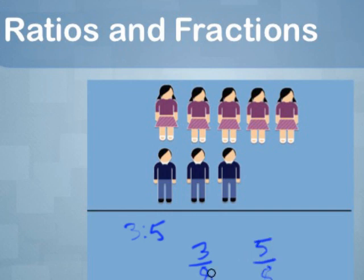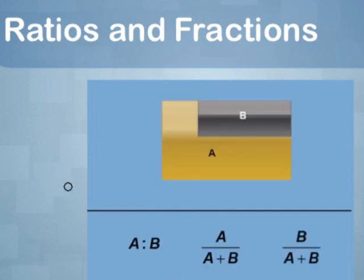See a pattern? The denominator, 8, is the sum of 3 and 5. So if there is a collection of two types of objects, and they are in the ratio A to B for two numbers A and B, then the fraction of A is A over the sum of A plus B, and the fraction of B is B over the sum of A plus B.